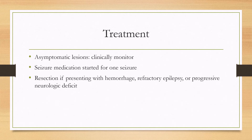For treatment, for asymptomatic lesions you can monitor clinically, and some people will also image at regular intervals. For a first-time seizure, seizure medication is generally started due to the abnormal MRI, which confirms epilepsy. If you are having refractory epilepsy — if it's difficult to control with medical therapy — then resection is considered.